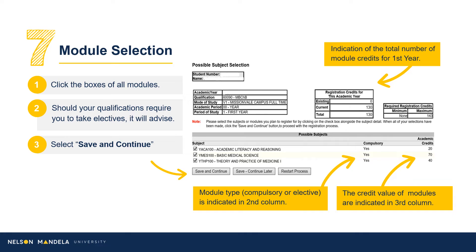Using the Curriculum Qualification document downloaded previously, please select all compulsory modules for your first year. Once complete, click Save and Continue.